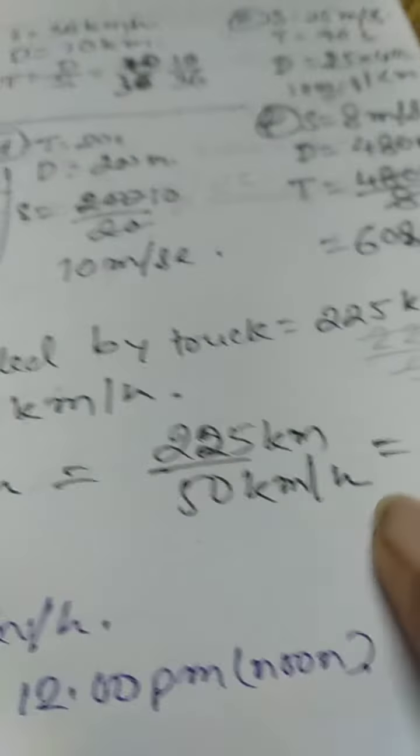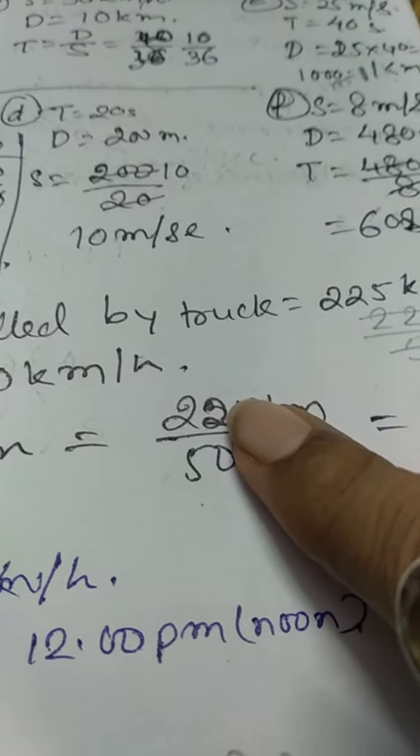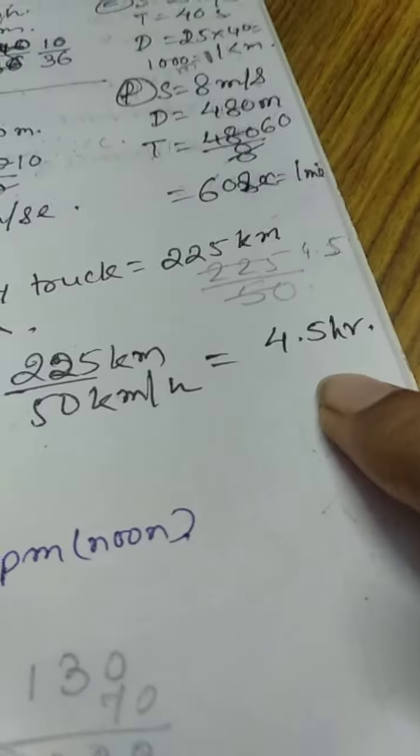See, time taken is 4.5 hours. 225 divided by 50 equals 4.5 hours.